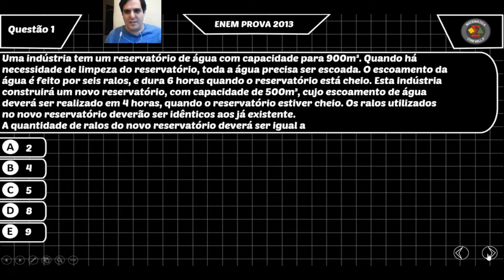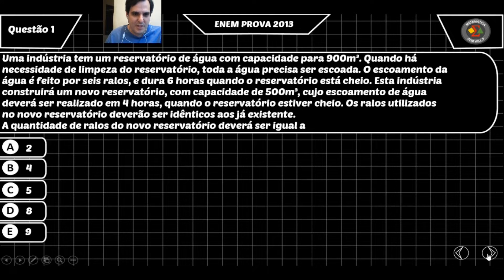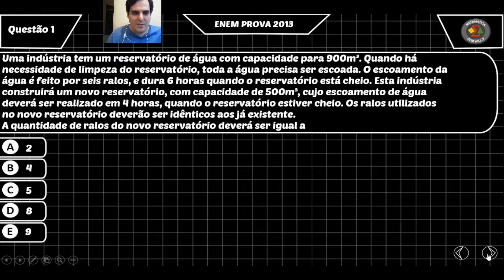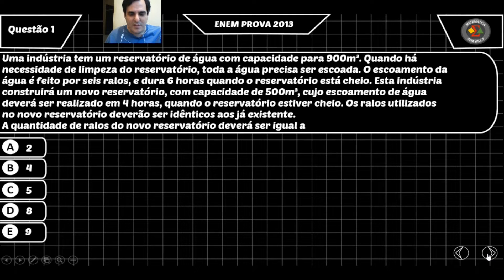Questão 1: Uma indústria tem um reservatório de água com capacidade para 900 metros cúbicos. Quando há necessidade de limpeza do reservatório, toda a água precisa ser escoada. O escoamento é feito por 6 ralos e dura 6 horas quando o reservatório está cheio. Esta indústria construirá um novo reservatório com capacidade de 500 metros cúbicos, cujo escoamento deve ser realizado em 4 horas quando estiver cheio. Os ralos do novo reservatório deverão ser idênticos aos existentes. Precisamos saber a quantidade de ralos necessária.